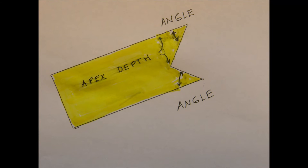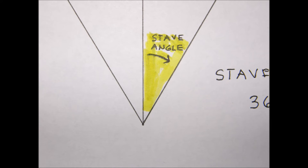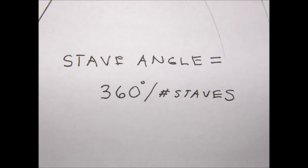There are two measurements which define the shape of the notch. The first is the angle of the surfaces relative to the stave's faces. The second is the depth of the notch apex from the outer surface. The notch angle is solely dependent on the polygon chosen — i.e., the number of staves. The apex depth is arbitrary, although in my opinion there is one particular location that is preferable. The stave angle is the angle at the cylinder's center subtending the stave, equal to 360 degrees divided by the number of staves.